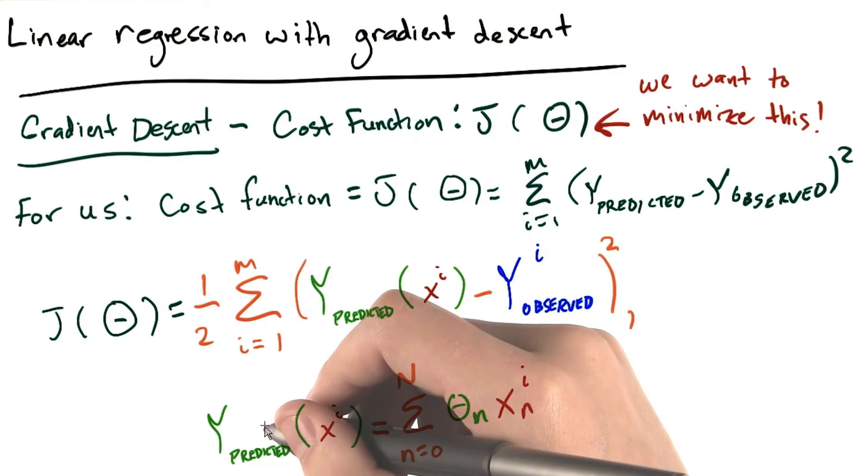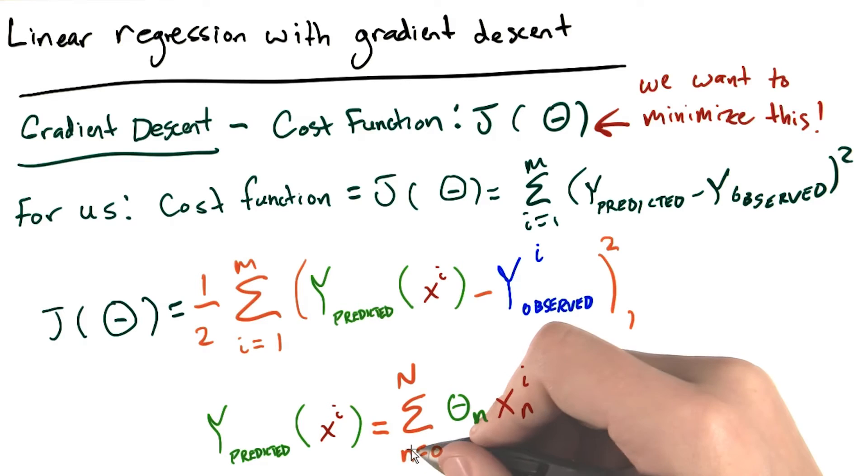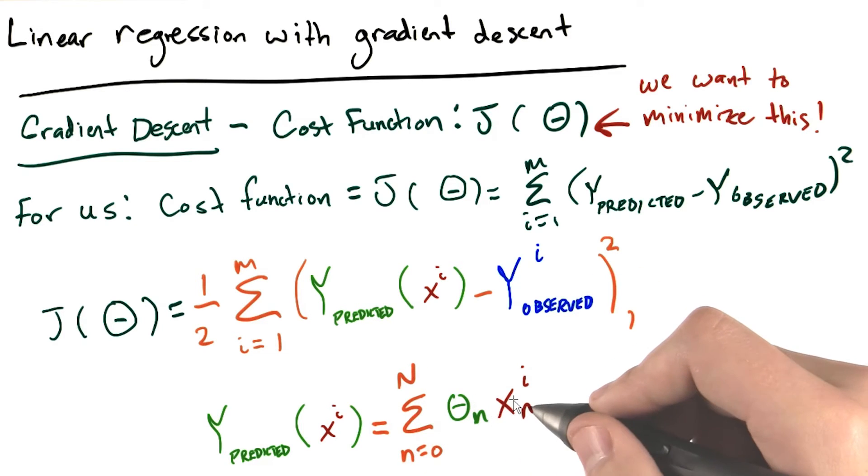Down here, we're just defining the way that we calculate the predicted value of y, given our input variables. And the way that we do that is that we say we sum from n equals 0 to big N of theta n times xn.